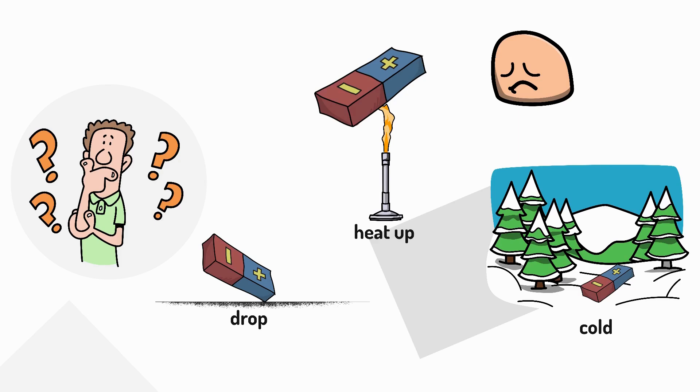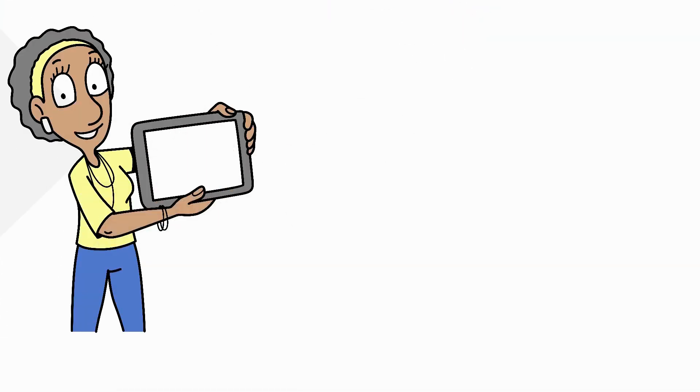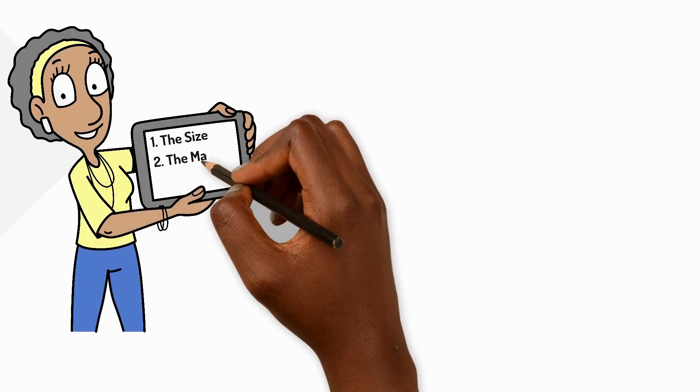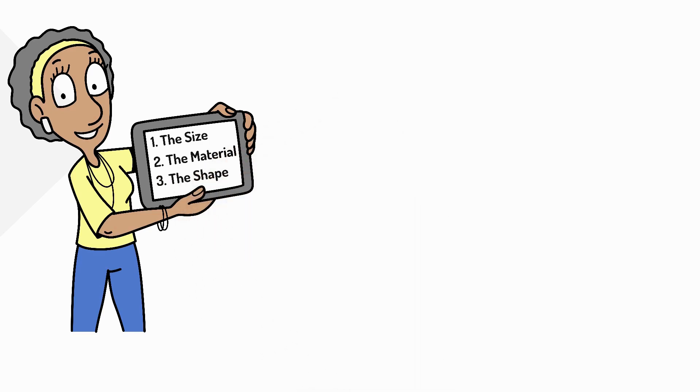So what does make a magnet stronger? There are three main things: the size, the material, and the shape. Firstly, size - bigger magnets are usually stronger.